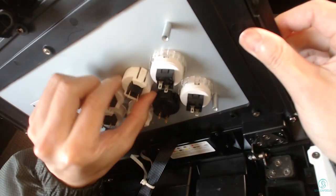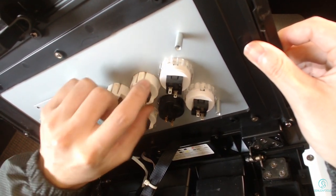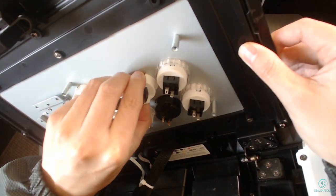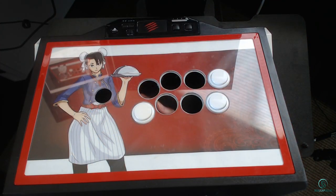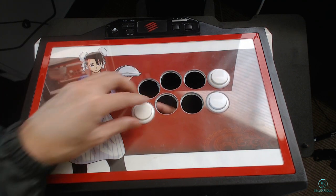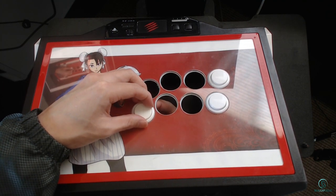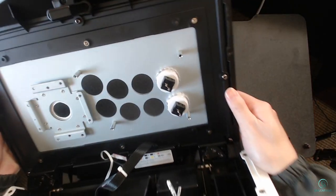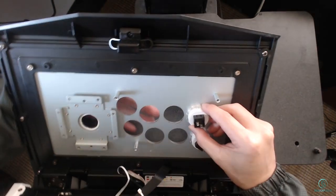Most buttons will be clip tight so squeeze the indents and push for removal. Other types may have screws so remove the rings and push out the buttons.